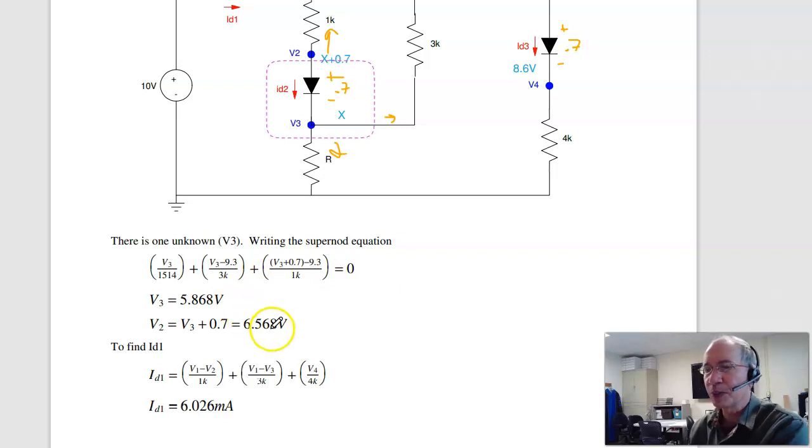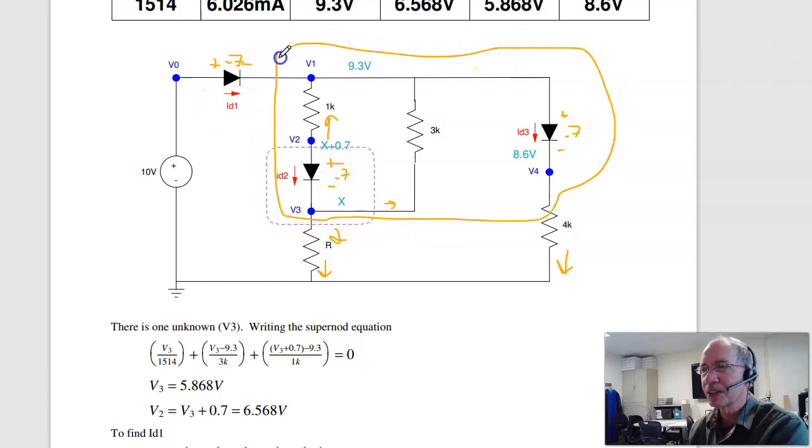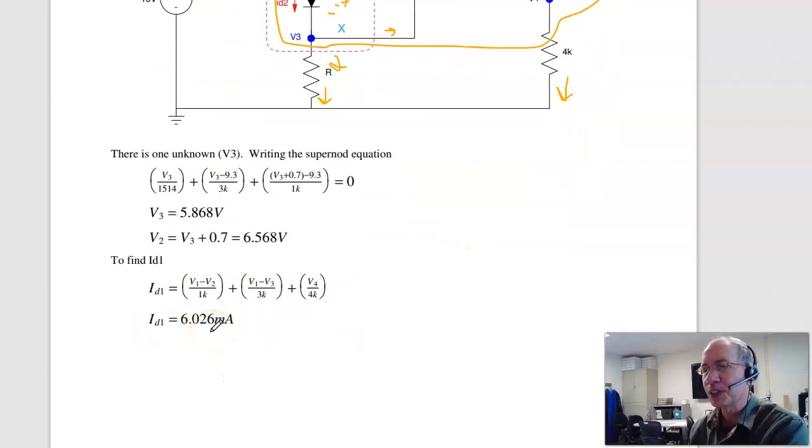V2 is V3 plus 0.7, 6.5 volts. And then the current ID1 is, well probably easiest, it's V3 over R plus V4 over 4k. Those two together. Current in equals current out. Draw a super node looking like this. Current in equals current out, 6.026 milliamps.